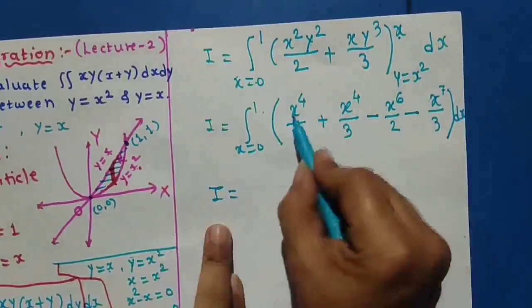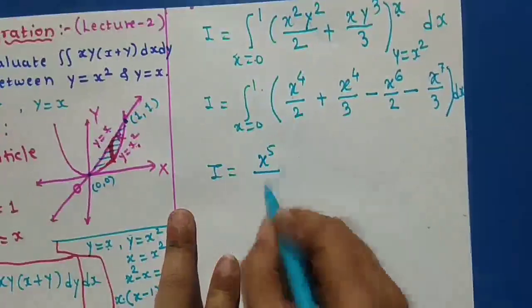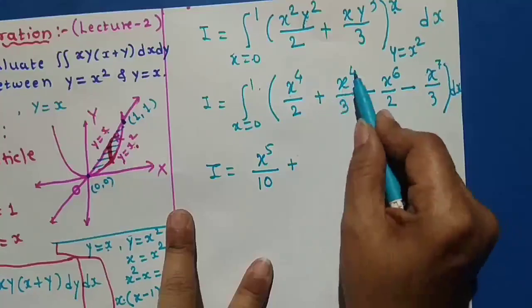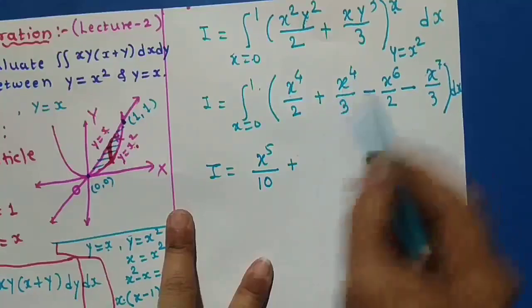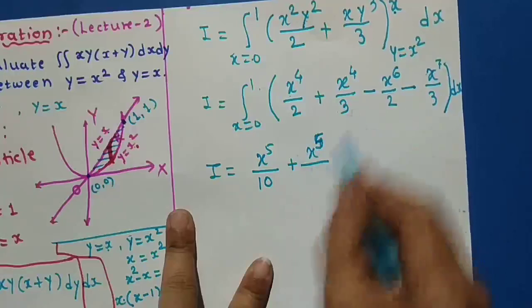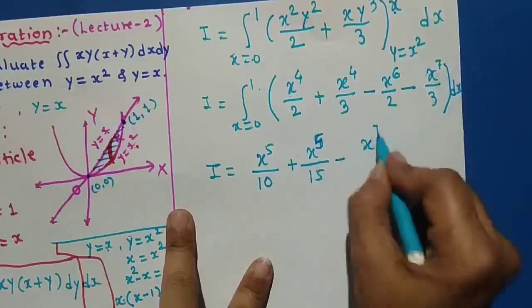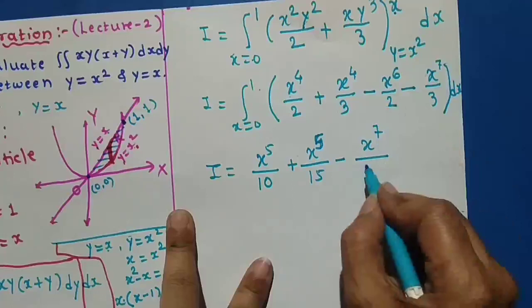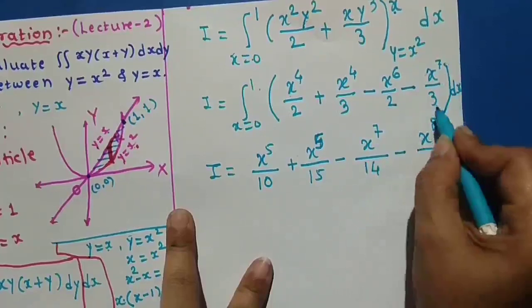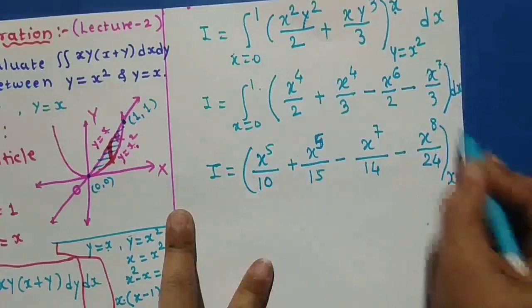We now integrate with respect to x. The integral of x⁴ is x⁵/5, so x⁴/2 integrates to x⁵/10. The integral of x⁴/3 integrates to x⁵/15. The integral of x⁶/2 integrates to x⁷/14. The integral of x⁷/3 integrates to x⁸/24. We then apply the limits from 0 to 1.